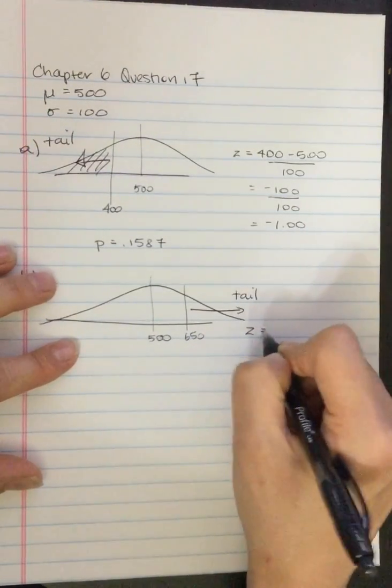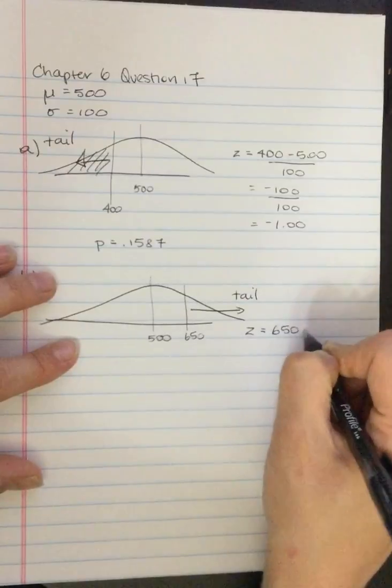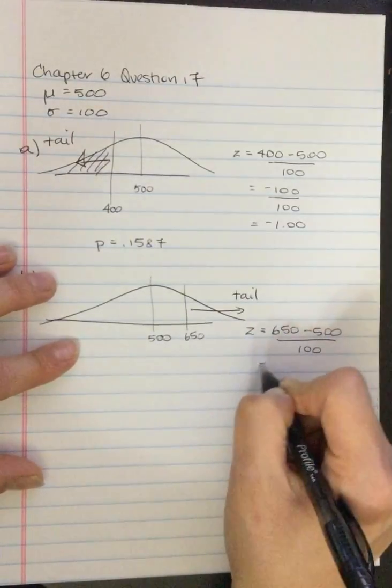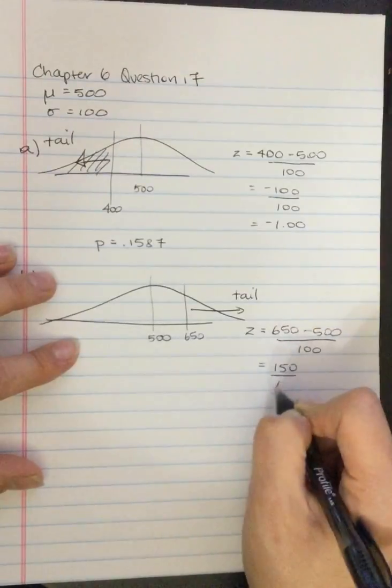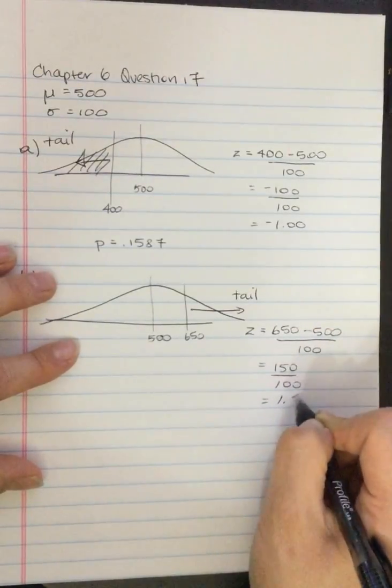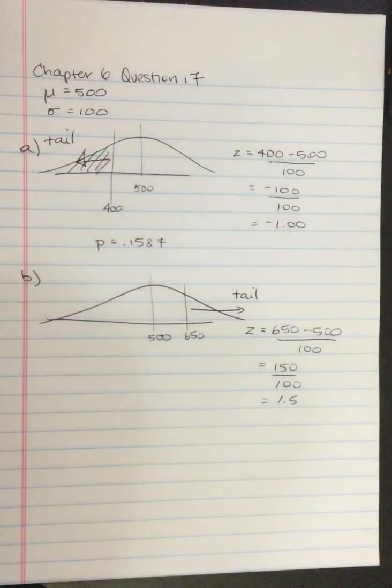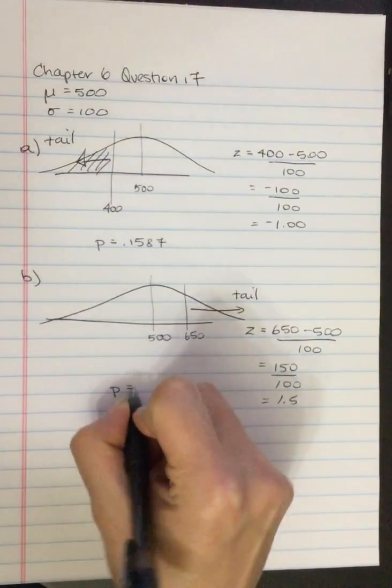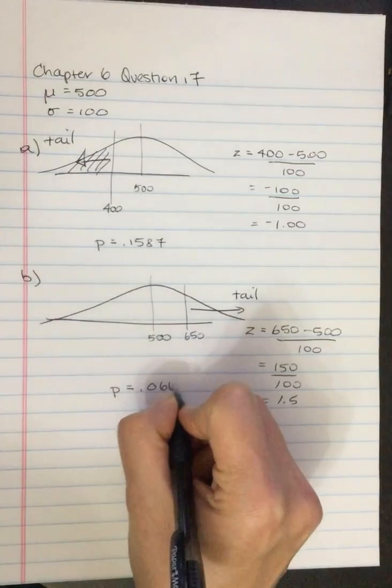So the z-score equals 650 subtract 500 divided by 100. So that's 150 divided by 100, which is 1.5. We look at that value in the unit normal table. We want the proportion in the tail, and that proportion is 0.0668.